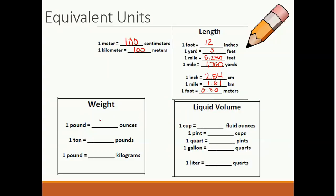Now let's look at the weight. 1 pound is equal to 16 ounces. 1 ton is equal to 2,000 pounds. And 1 pound is equal to 0.45 kilograms.